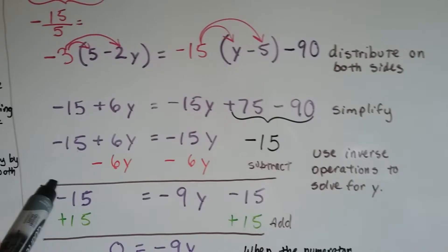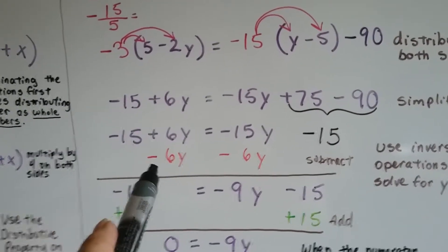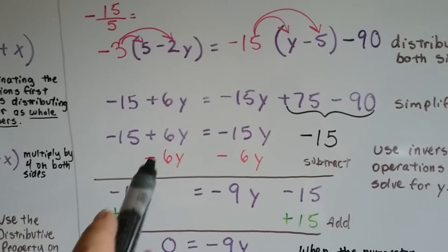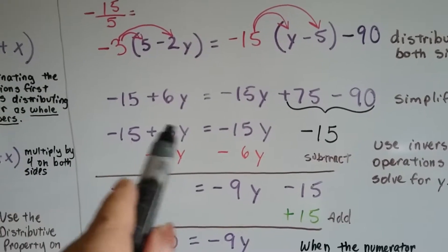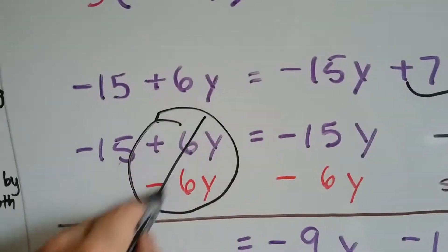Now we can start using the inverse operations to solve for y. I see a positive 6y here. I can take away a 6y. There's a positive 6y. That's going to create a zero pair, isn't it? And that's going to be eliminated.